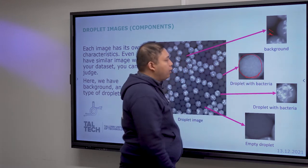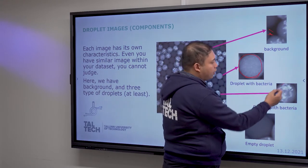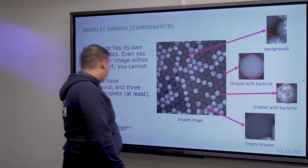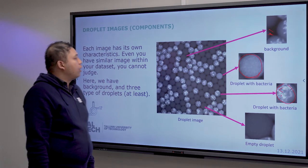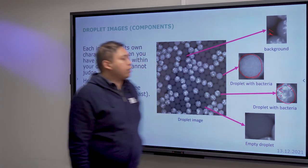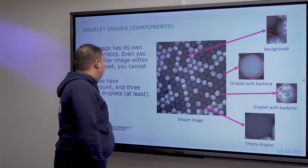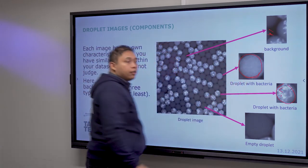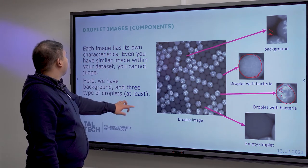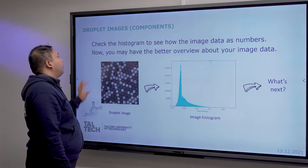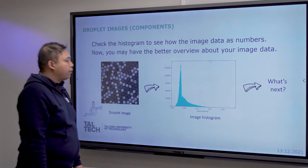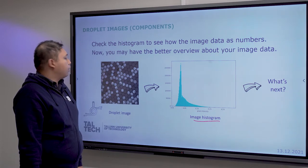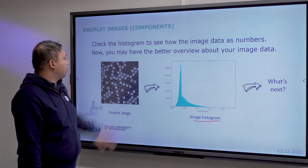There are droplets with bacteria that are widely spread, droplets with a scattered culture, and empty droplets. For image analysis of droplets, we need to segment at least these four types of objects. To simplify, at minimum you need to segment between the background and the droplet — that's the first step. After processing the image, you expect to have a histogram that is easier to work with than raw image data.